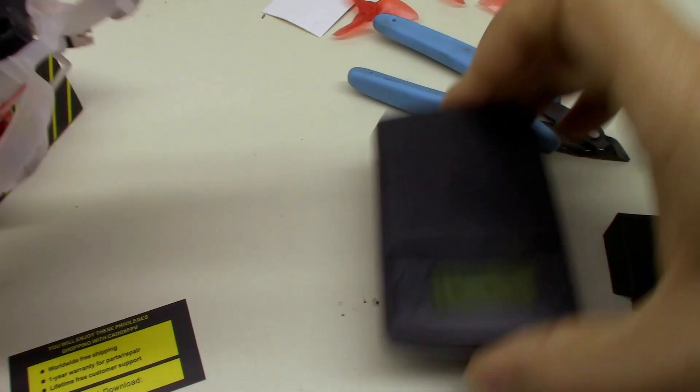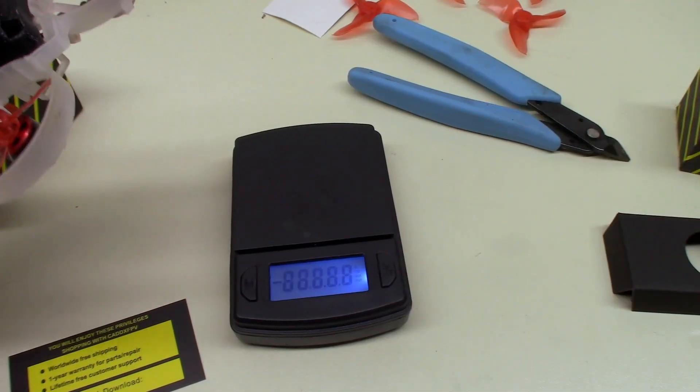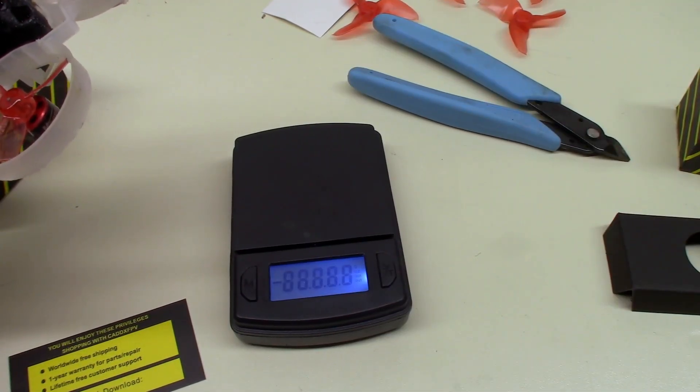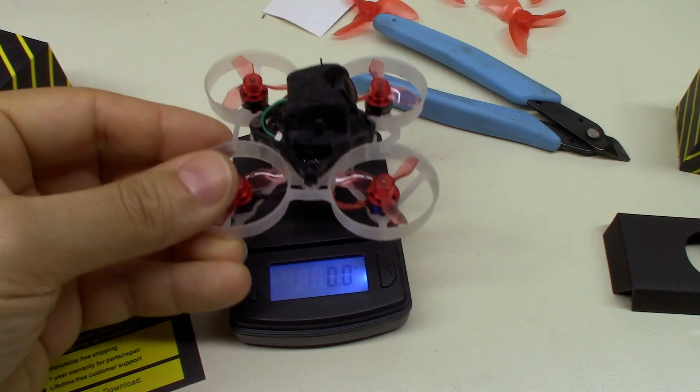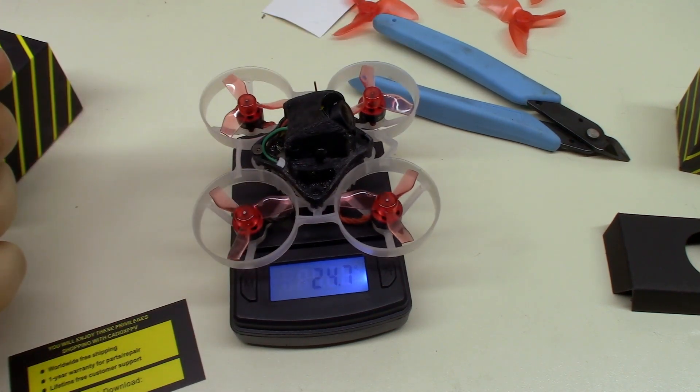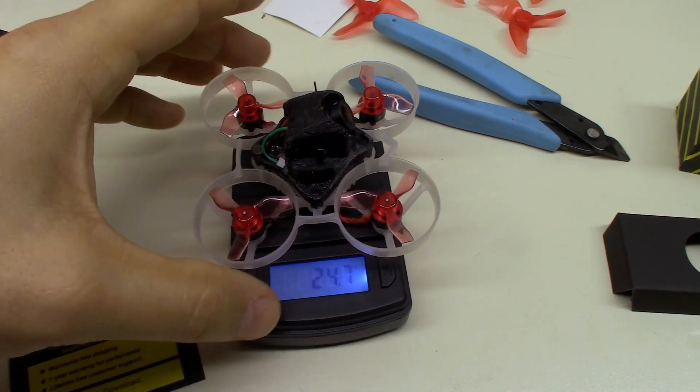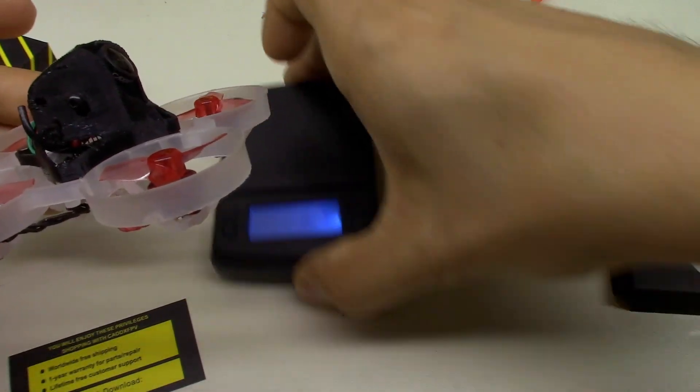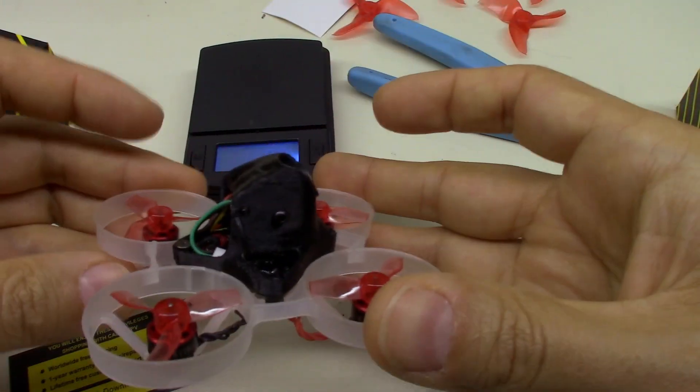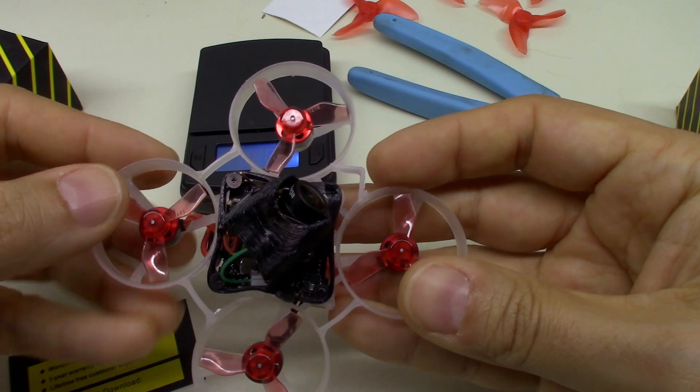Let's go ahead and weigh this little beast now and see how much pork we have added. Alright, so now we are sitting at 24.7 grams. So we have added basically 4 grams to the total weight of this quad. That's a lot. That's like 20%.